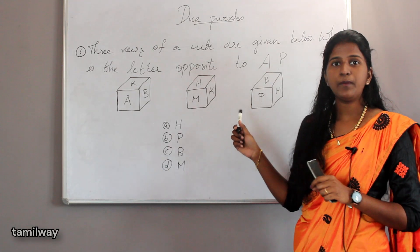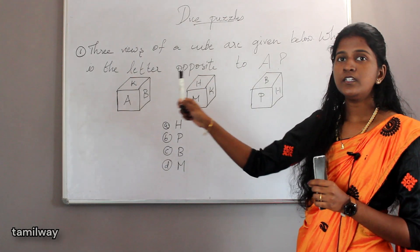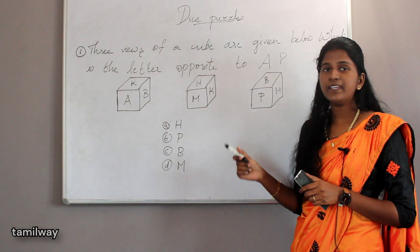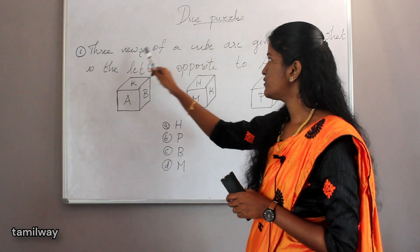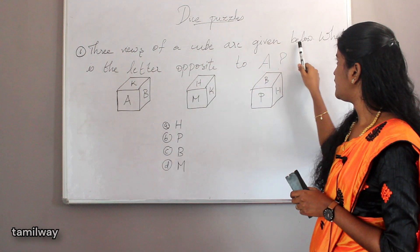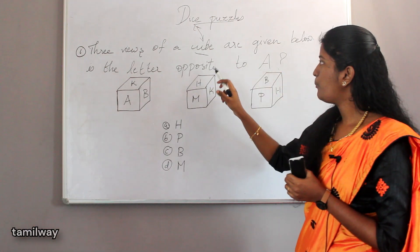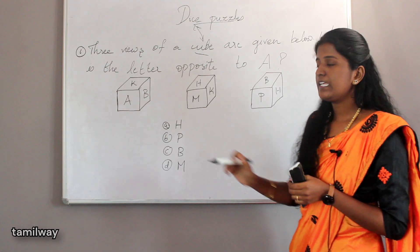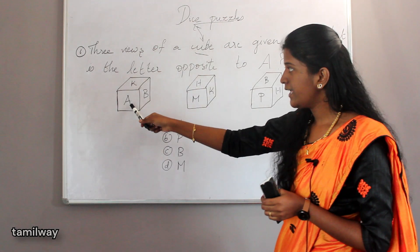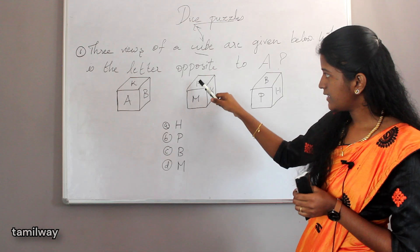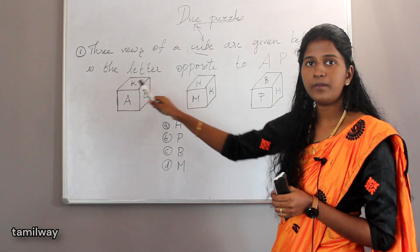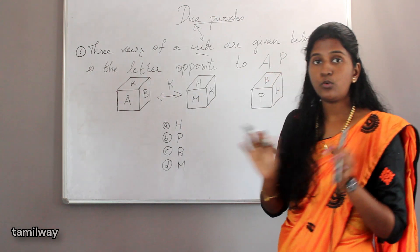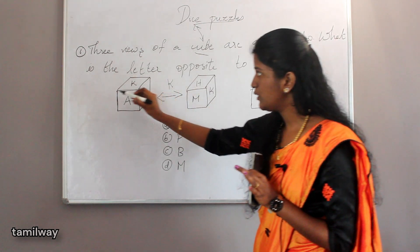Let's see the first question. This is Group 1 from 2014. Three views of a cube are given. What is the letter opposite to A? Looking at the cubes, we have: A, K, B in one view; M, H, K in another; and K appears again.